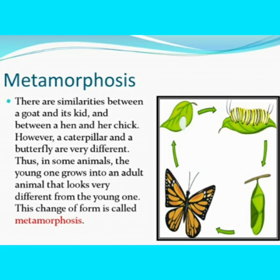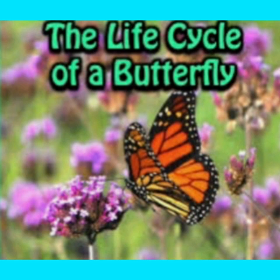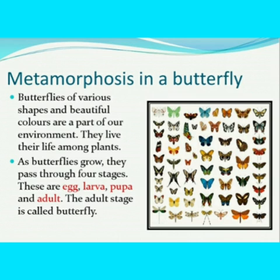Let's learn about the life cycle of a butterfly. Butterflies of various shapes and beautiful colors are a part of our environment. They live their life among plants. As butterflies grow, they pass through four stages. These are egg, larva, pupa, and adult. The adult stage is called butterfly. Let's learn each stage in detail.